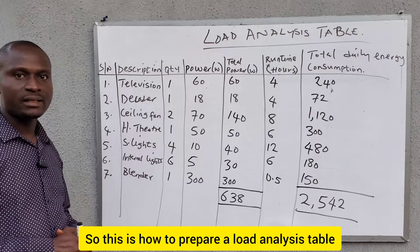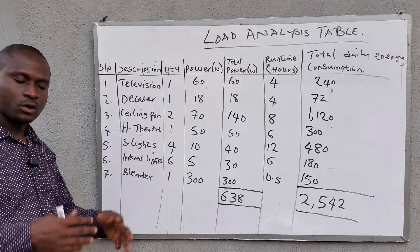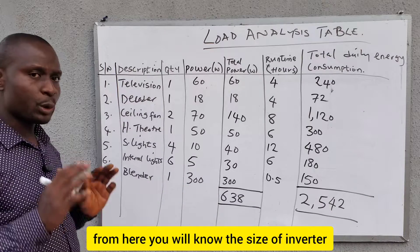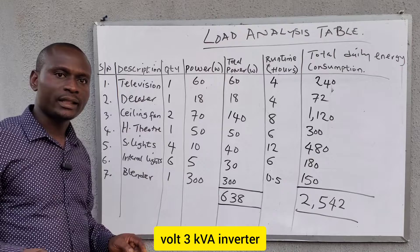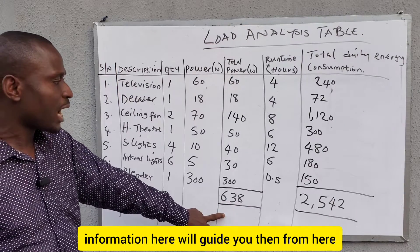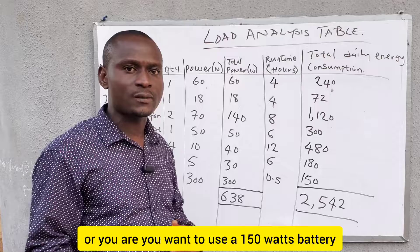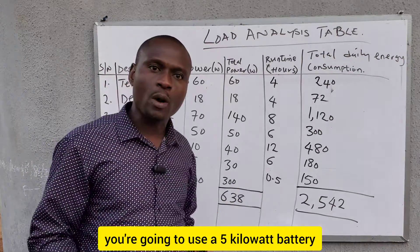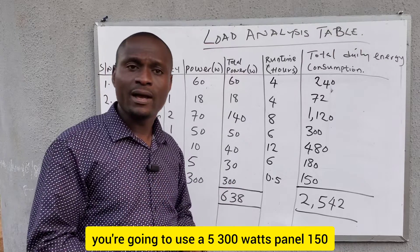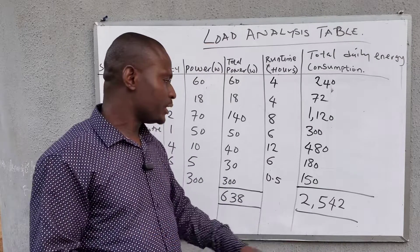This is how to prepare a load analysis table. Whenever you go to a client's house, always bring a notepad and a pen so you can gather all this information. When you come back, you work through it and from here you can size all the components — you'll know the inverter size to buy, whether a 24V 3 kVA or 24V 2.5 kVA inverter, and you'll know whether to use 200 Ah batteries or 150 Ah batteries, or for lithium batteries whether to use a 5 kWh, 2.5 kWh, or 10 kWh battery. You'll also know how many panels to use — whether 300 W, 150 W, 100 W, 350 W, or 500 W panels.